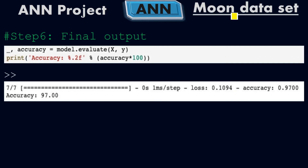This project uses the moon dataset, which is a built-in dataset in the scikit-learn library. We created a sequential ANN model, trained it, and got a final evaluation of 97% accuracy with 10% loss. This is a simple artificial neural network project in Python, and I hope you understood all the key points of ANN in deep learning.